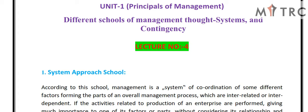Hello everyone, this is Mukesh Kumar and today we are going to discuss about the different schools of management thoughts. These schools are the systems school and the contingency school. In the previous lecture we discussed about the scientific management school and the behavioral management school. In this lecture we will discuss about the system approach school and the contingency management school.